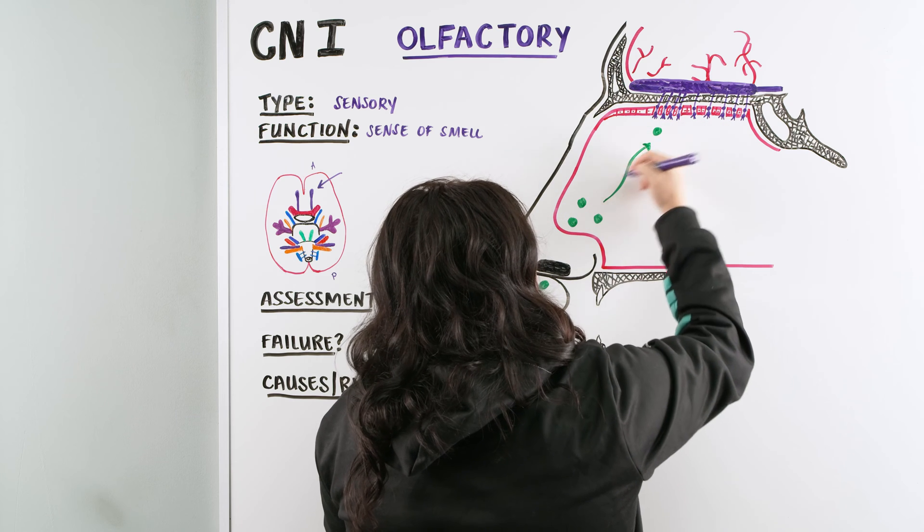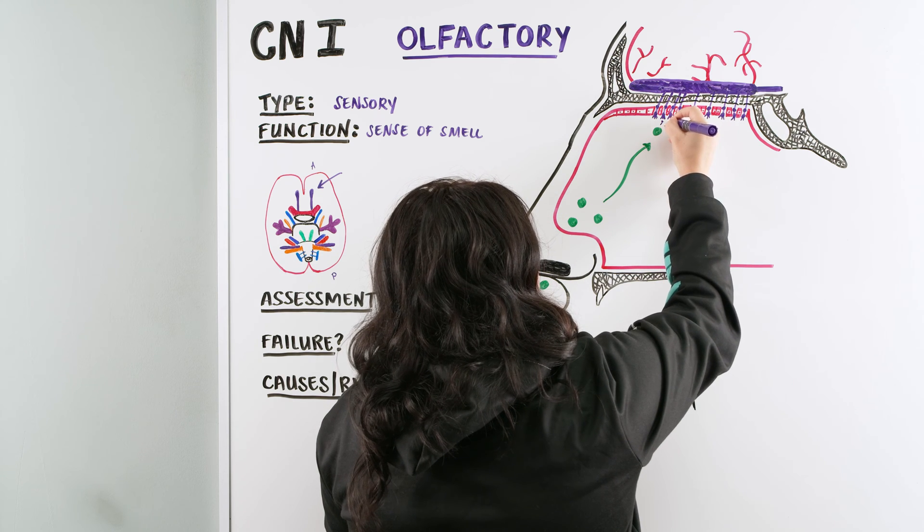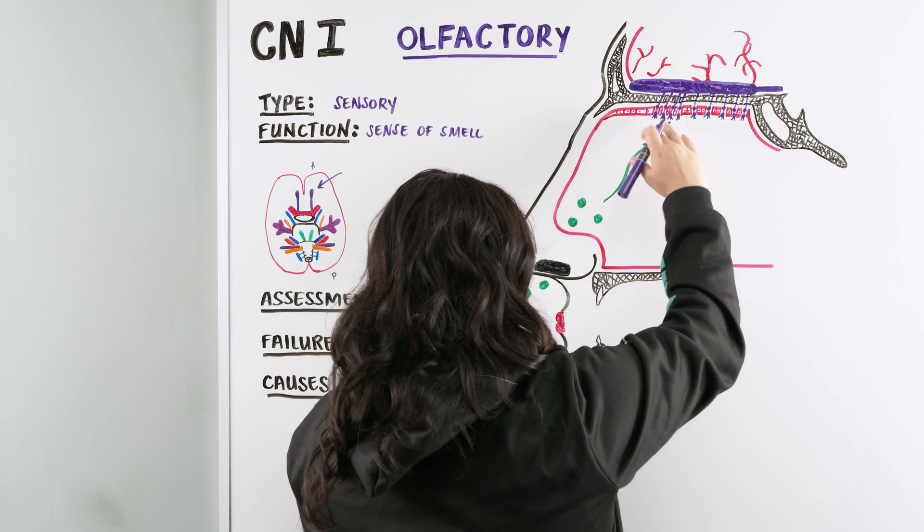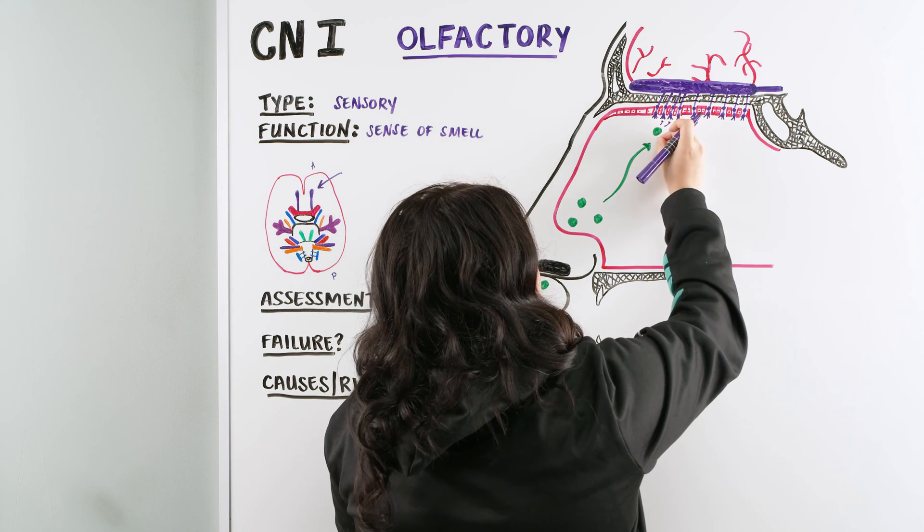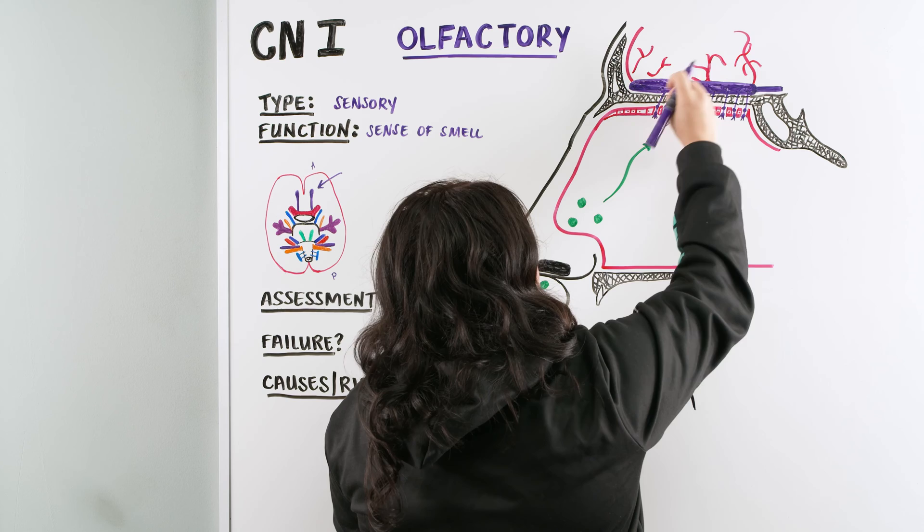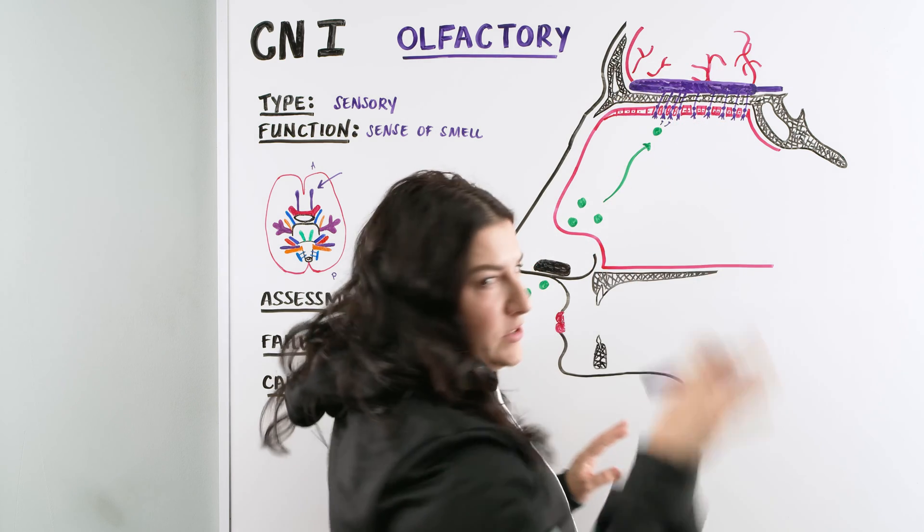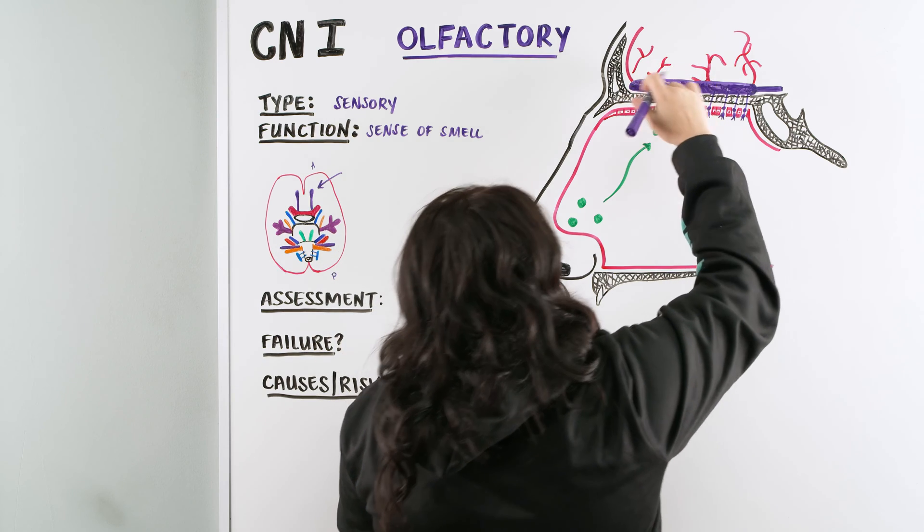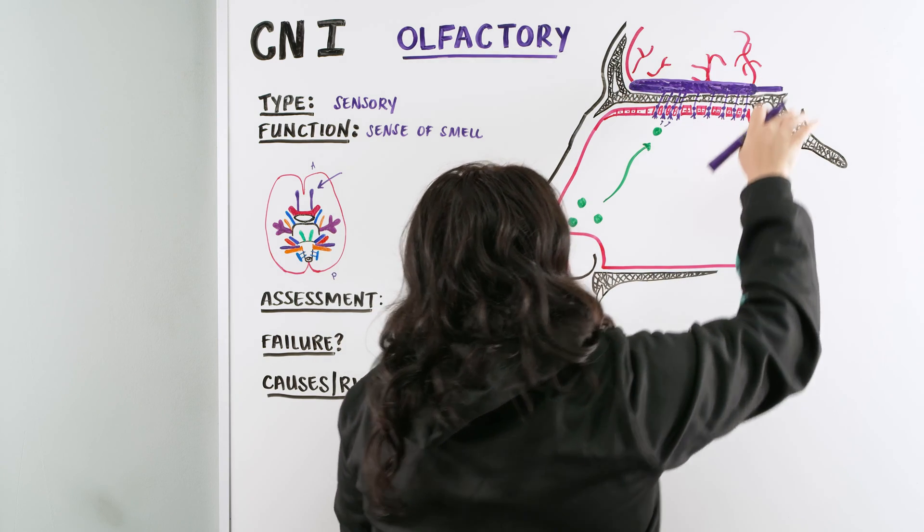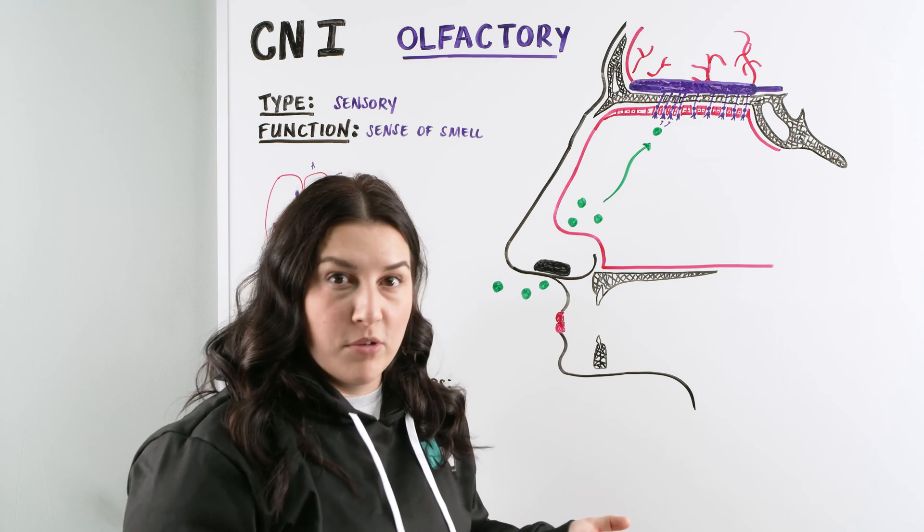So those odorants come up in, they eventually interact, if they can, with whatever receptor fits for them. All right, now we have that odorant sending a signal up into the bulb eventually. There's a little more anatomy in there. We don't need to touch on that. That occurs, then eventually sends these messages out into the brain. Different portions of the brain are able to tell us what we're smelling.